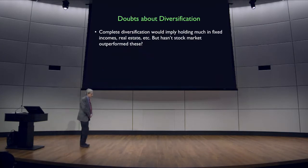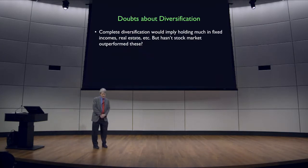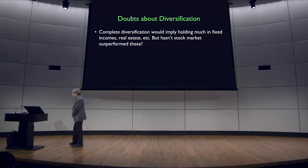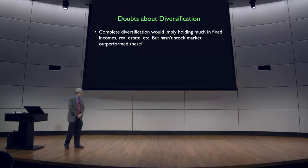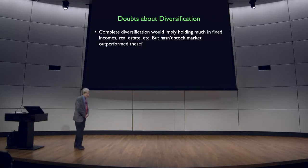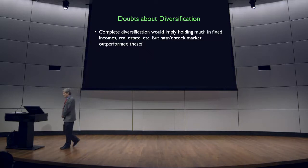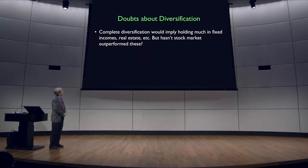The question is whether we're really talking about complete diversification. Often when we talk about the Capital Asset Pricing Model, it is assumed that we're diversifying across all stocks, and maybe all stocks and all bonds. But in fact, if you wanted to be completely diversified, you'd want to include other assets like real estate or commodities like oil as well.